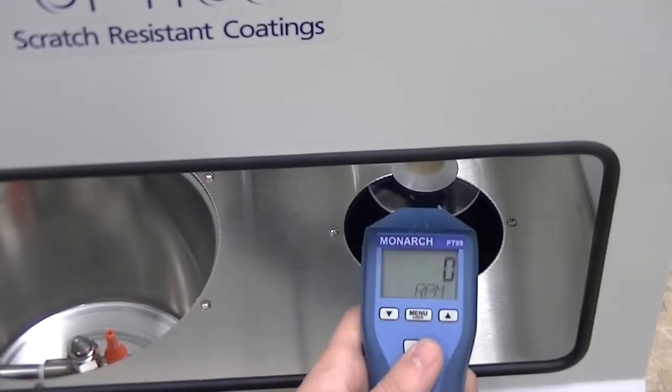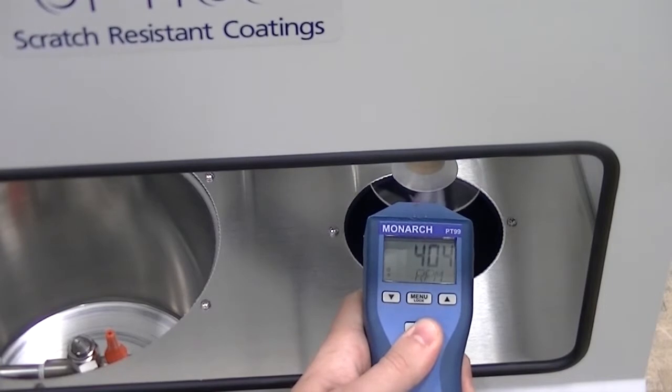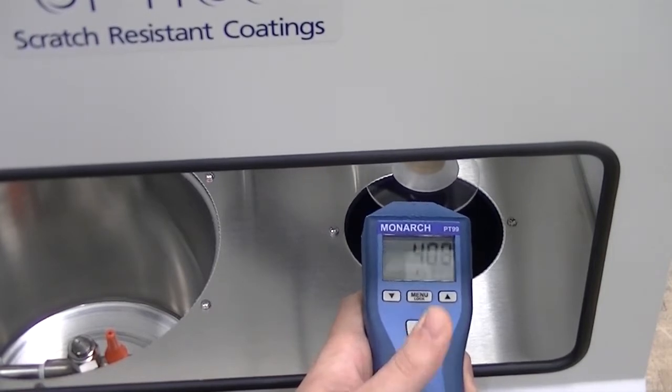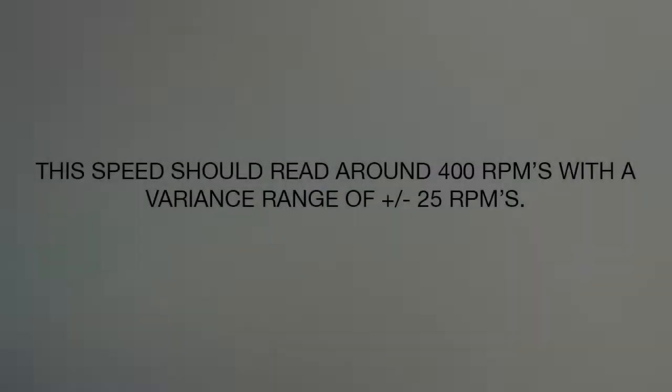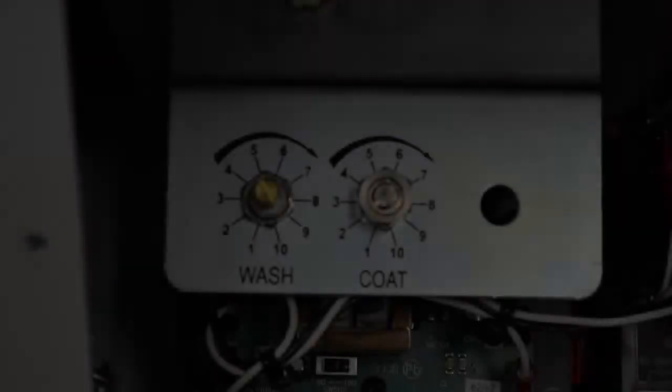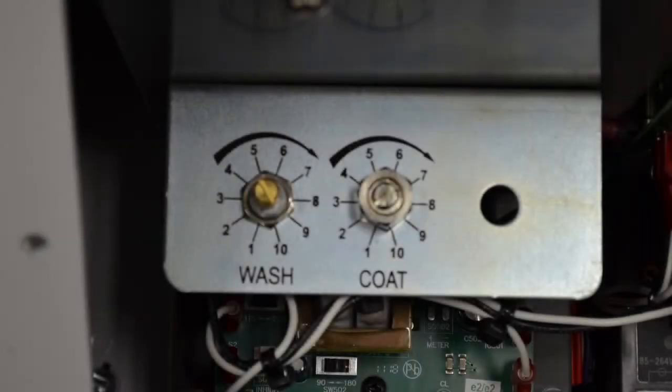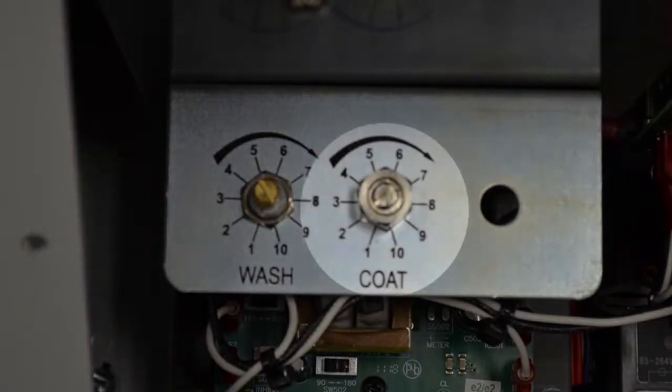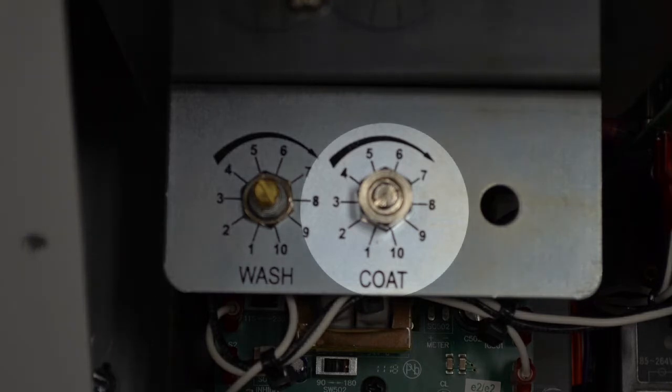Point the tachometer at reflective tape, then press and hold in top button. If this needs to be adjusted, use the speed pot labeled coat on new machines or labeled with plus symbol on older machines.